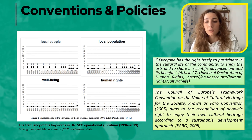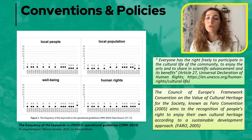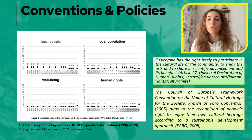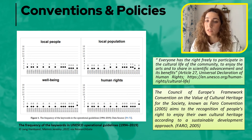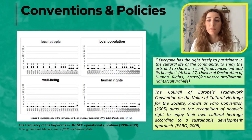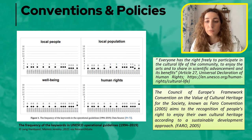One of the important conventions with a really significant impact and role is the Council of Europe's Framework Convention on the Value of Cultural Heritage for Society, known as the Faro Convention 2005. It aims at the recognition of people's right to enjoy their own cultural heritage according to a sustainable development approach. The Faro Convention defines heritage communities as a group of people who value specific aspects of cultural heritage and wish, within the framework of public action, to sustain and transmit it to future generations. Hence, they are actively embedded in an increasingly articulated process of enhancement of all instruments provided for the safeguard of cultural heritage in all its forms.